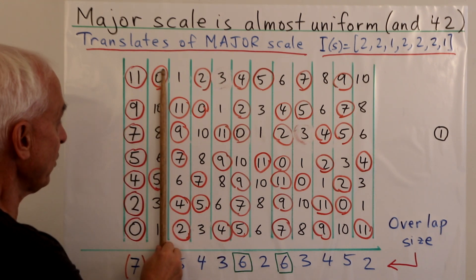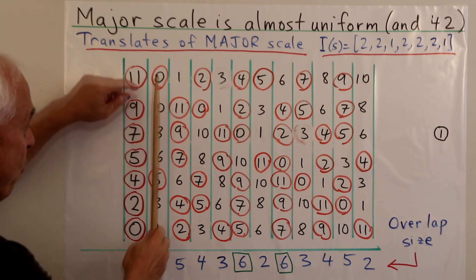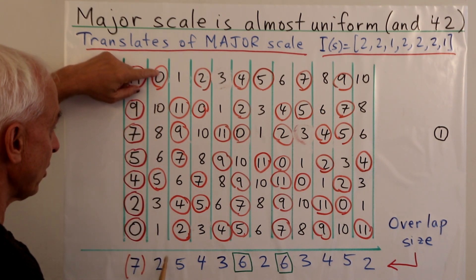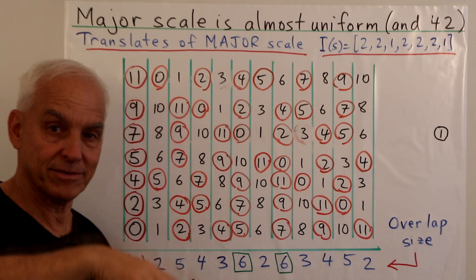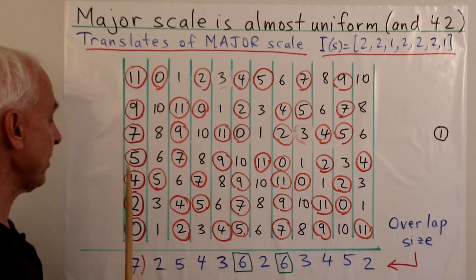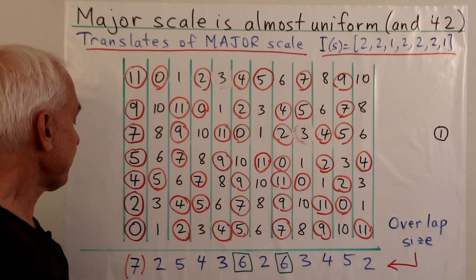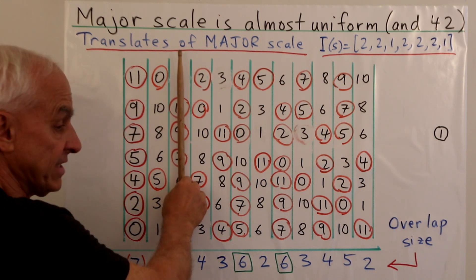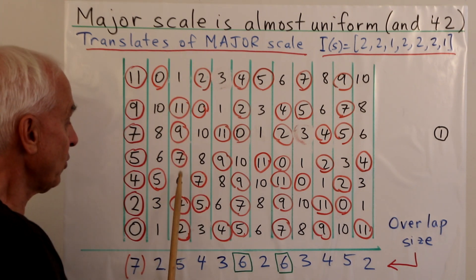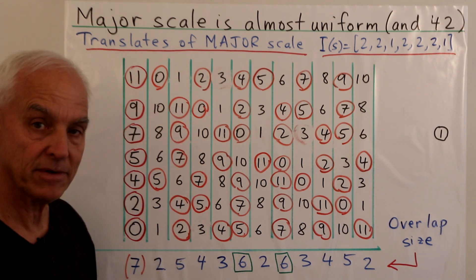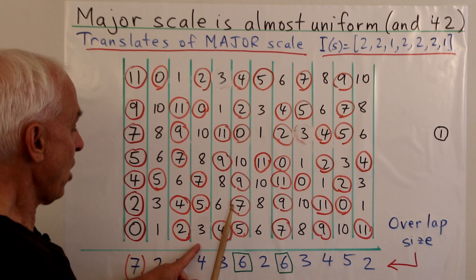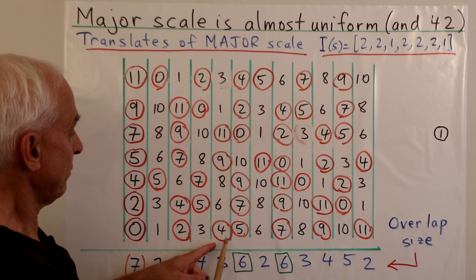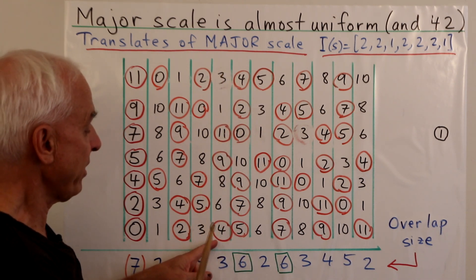And then I'm just circling in these transposed scales the notes which are common with the original scale. And let's see that for the first one, when we've gone up one step, there's two notes in common. Remember when I played the D-flat, there was an F and a C? There's the F and the C. And then in the next one, which is the D scale, there's 1, 2, 3, 4, 5 in common. The next one is the E-flat scale, there's 4 in common. The next one is E scale, there's 3 in common.